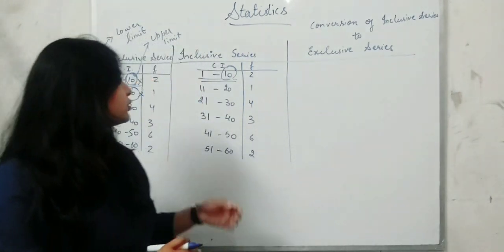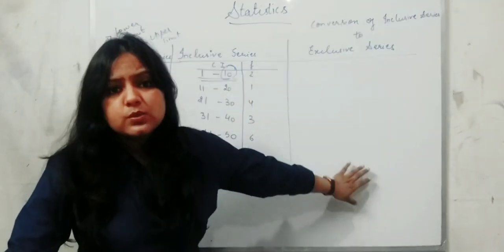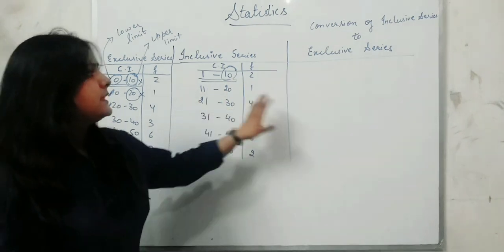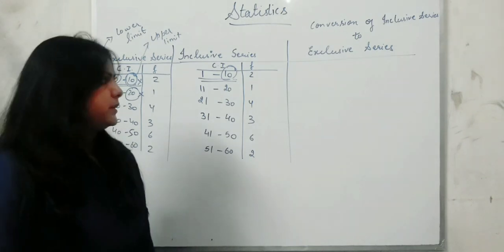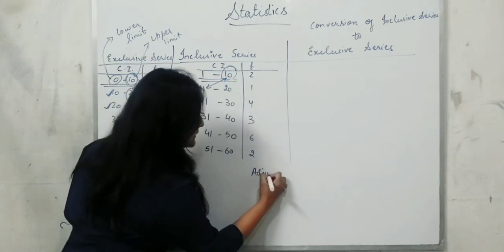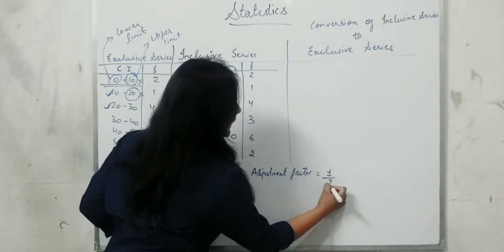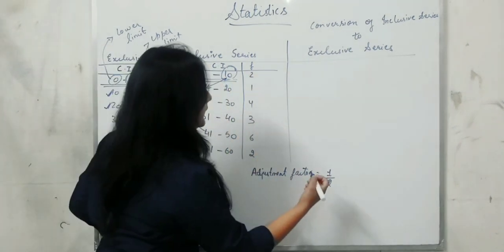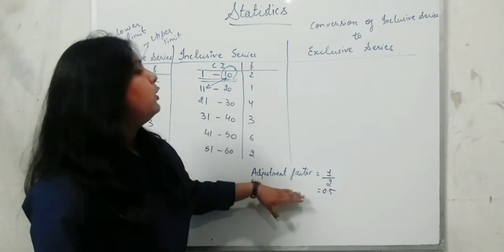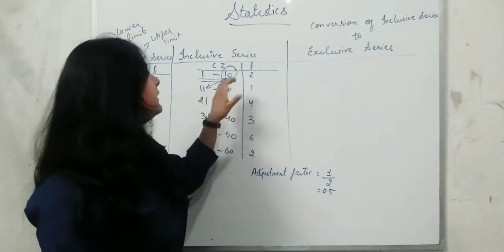Now, we need to understand how to convert this inclusive series into an exclusive series. Because some exam questions ask: convert the series into exclusive series, or calculate mean, median, or mode from an inclusive series. So how do you convert? Here we look at the difference between the upper limit of one class and the lower limit of the next. We take the average of that difference — we get 0.5. This 0.5 is the adjustment factor. What you have to do is subtract it from the lower limit and add it to the upper limit.